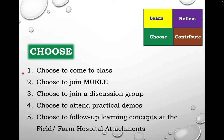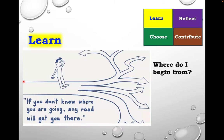The first pillar of choice is simple. The students enroll for the subject, they opt to come to class, they choose to join the learning platform Moodle, they choose to join a discussion group, to attend practicals, to follow up the learning concepts in the field, farm, or hospital attachments. The choice is theirs — we don't have much control over this. When it comes to learning, we need to guide them and show them where they can start from, because it looks like a jungle out there.